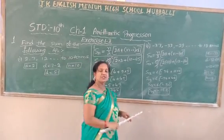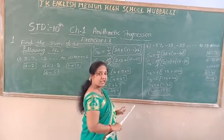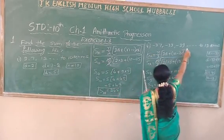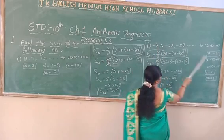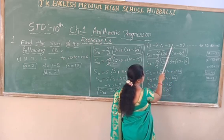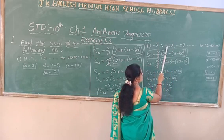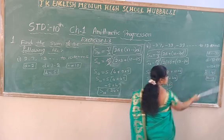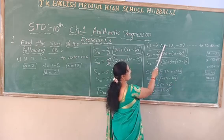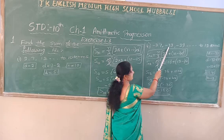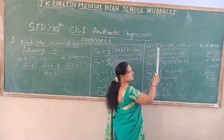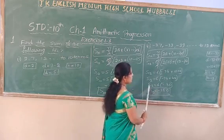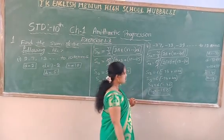The same formula, same type. But in the second question the terms are negative terms. Be careful. Using the same formula with the AP minus 37, minus 33, minus 29... we find a equals minus 37. D value: minus 33 minus of minus 37 — minus of minus 37 becomes plus 37 — so d value becomes 4. Substituting all the values, the sum of the terms comes as minus 180.